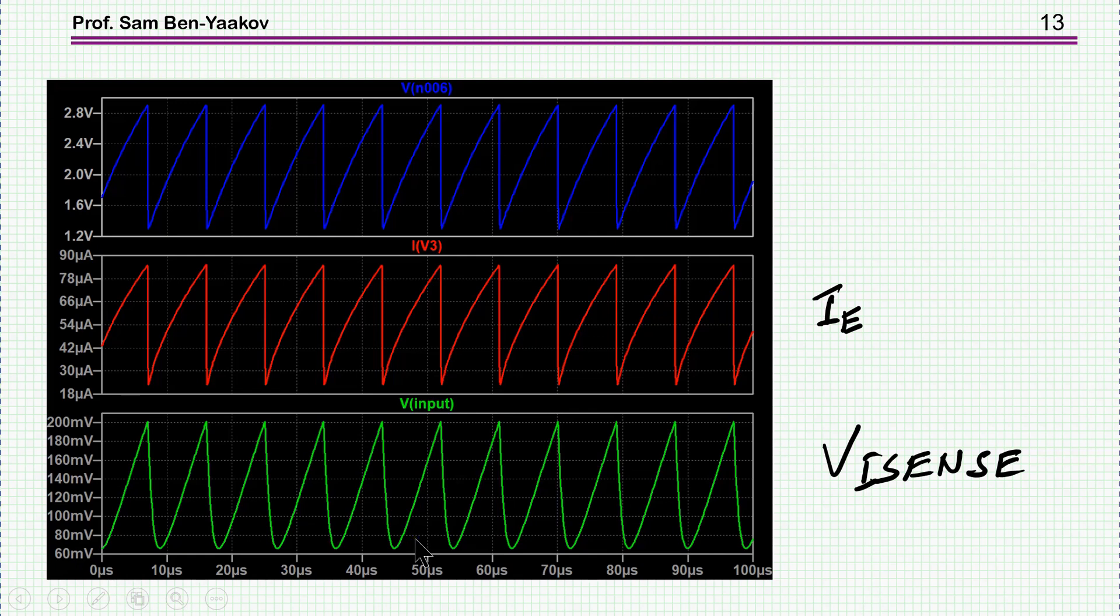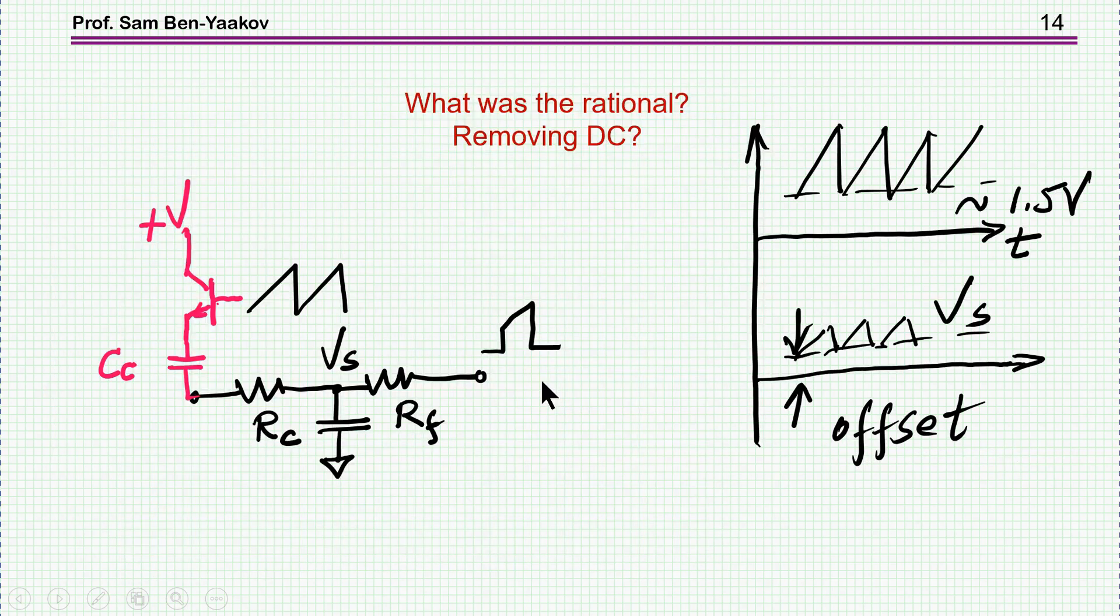So the question is now, why on earth would anybody add here a capacitor? What's the motivation? What's the rationale? Let me guess that the reason for doing this is the fact that this ramp has a DC offset. So here you are going to have a DC offset too. Perhaps the person who decided to add this to the circuit was concerned about this offset and therefore thought that by adding this capacitor...